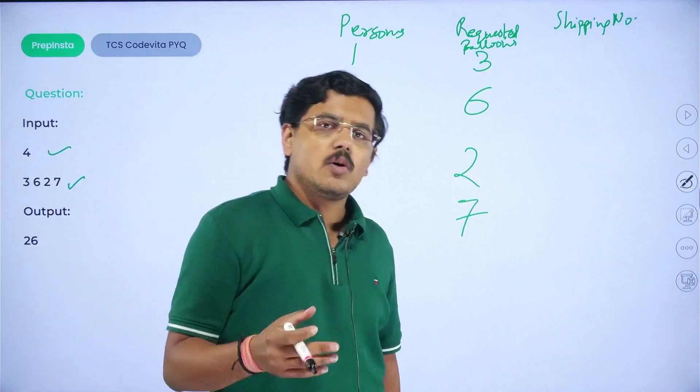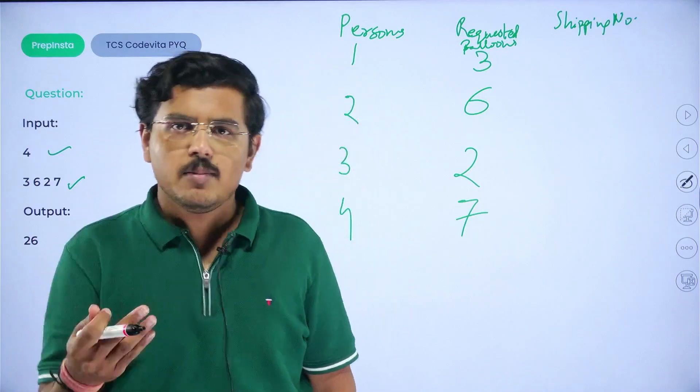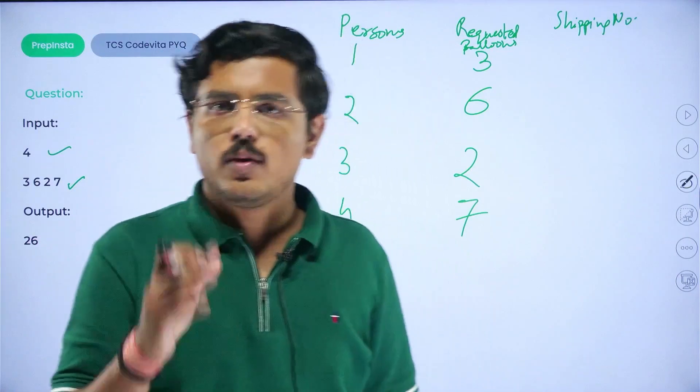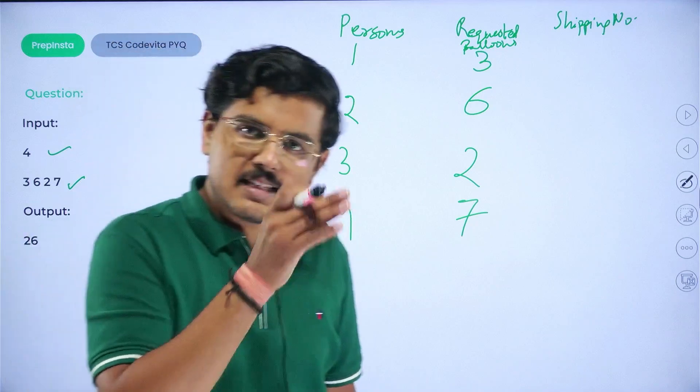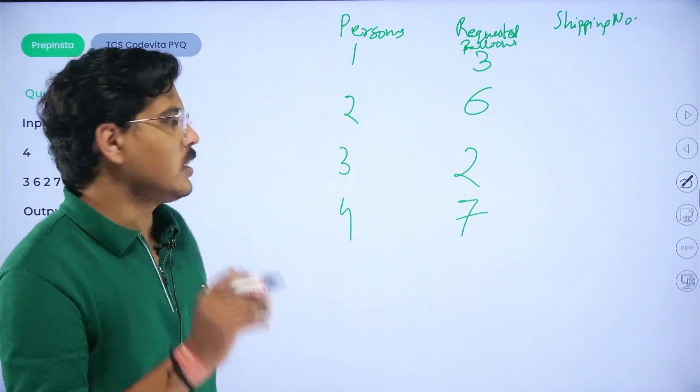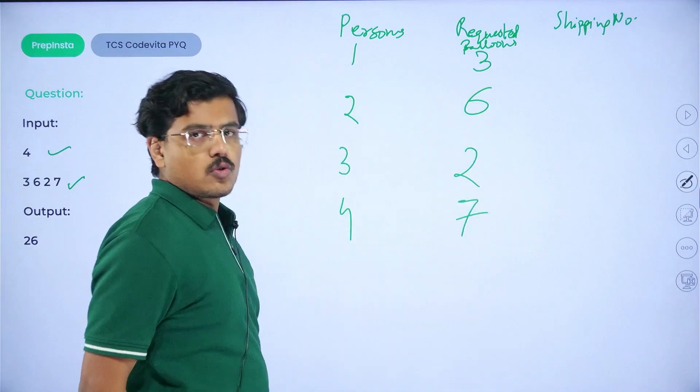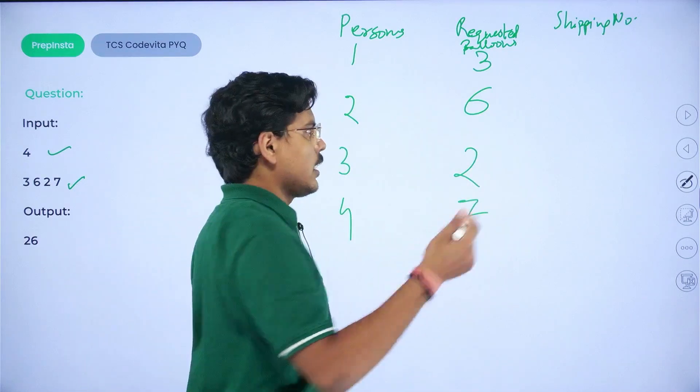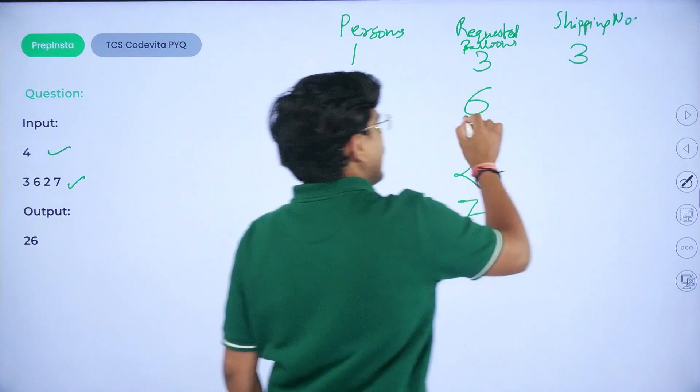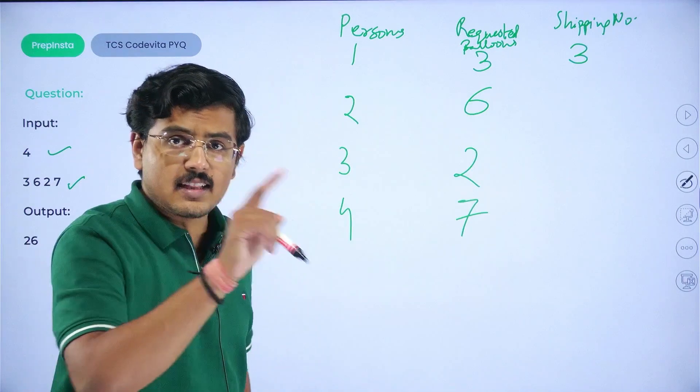If you carefully see, it is quite similar to what you were doing in the previous question. The theme is the same. All you need to do is look carefully and dissect the question accordingly. Now see, this person has requested three balloons, so you can only send three balloons. This person has requested six, now this is greater than five.